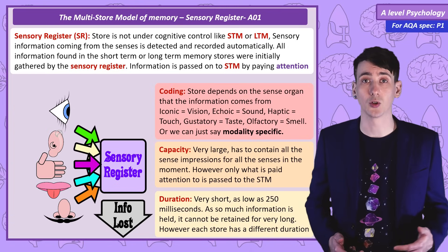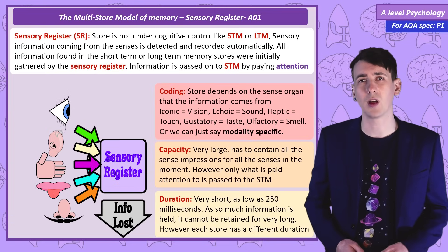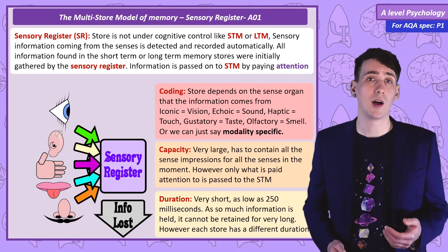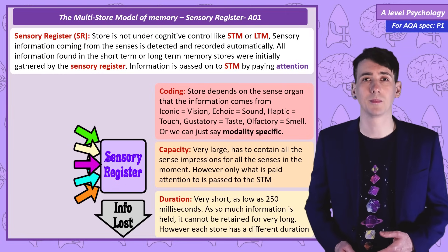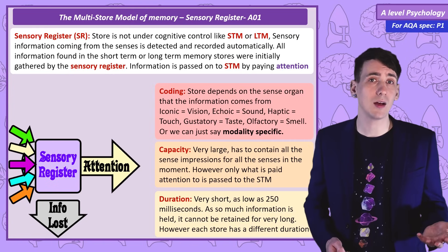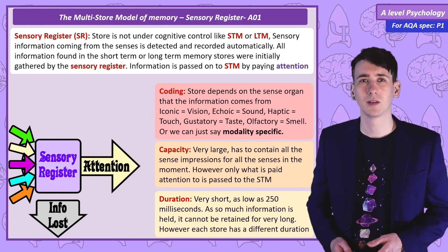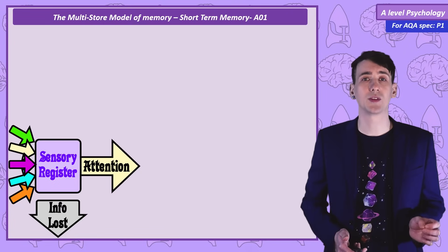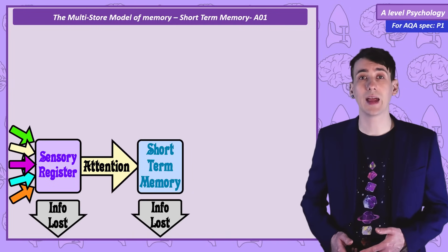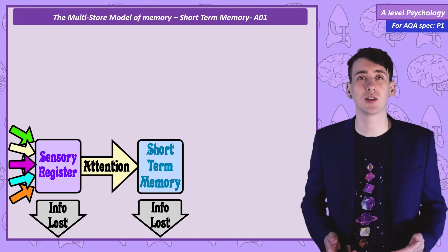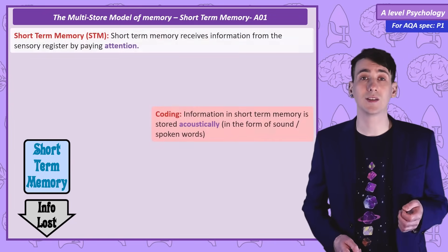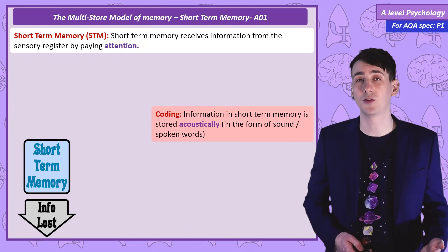You're not consciously aware of that massive amount of information coming in. For that we need to pay attention — maybe to a particular sound or object in our vision. So information moves from the sensory register to the next store, short term memory, through attention. Any information that isn't paid attention to is lost. We say short term memory coding is acoustic — information in the form of sound.